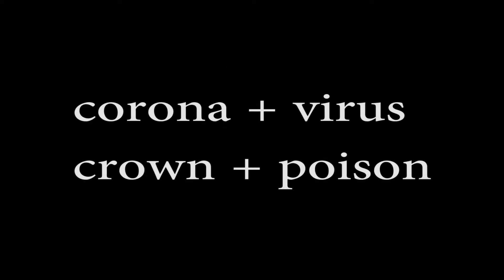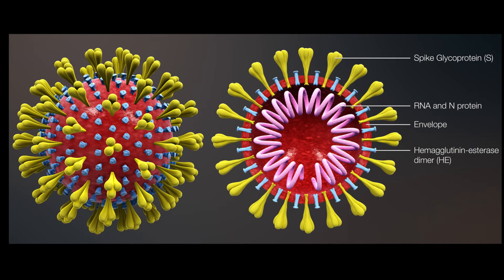So when you put the two together — corona + virus — you're saying crown poison. Why is it called coronavirus? When you see an up-close picture of the coronavirus, it looks as if the virus has little spikes coming from it, so it looks like the spikes coming from a crown, or a wreath, or a garland. Latin isn't just in the word coronavirus, but also in other words you've been hearing and seeing in the news.